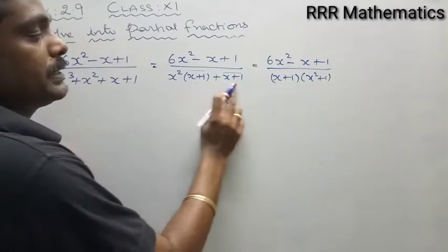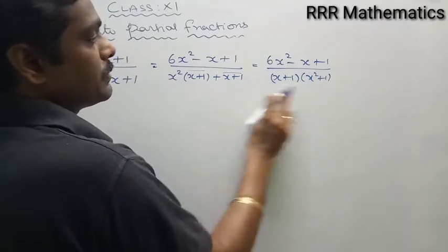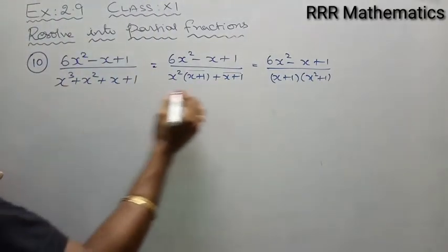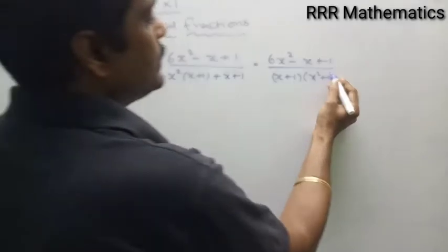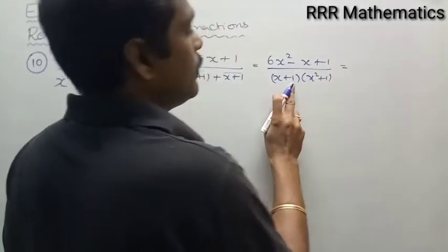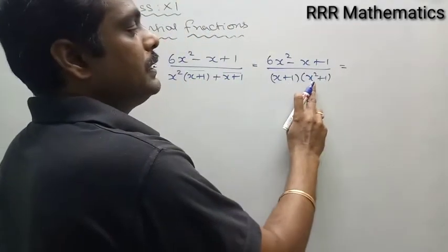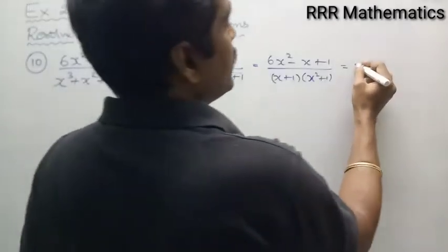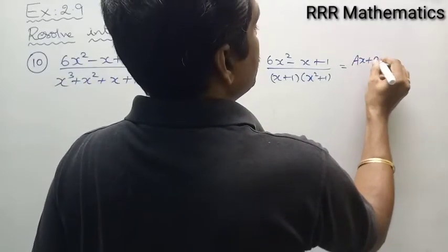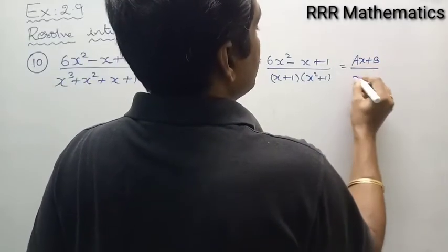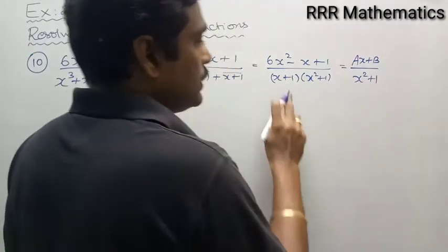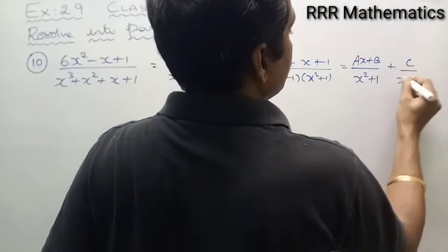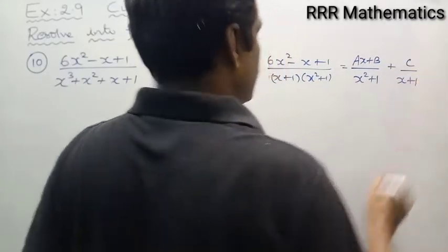Taking (x+1) as common, x²+1 is left. Now, since x²+1 cannot be factorized further, I can write (ax+b)/(x²+1) for the x²+1 factor, and some constant c/(x+1) for the (x+1) factor.